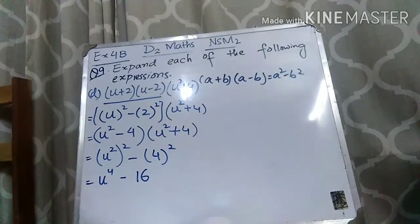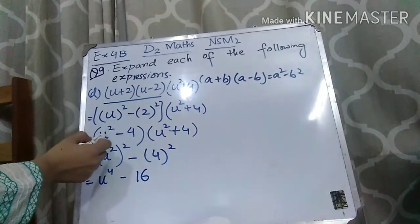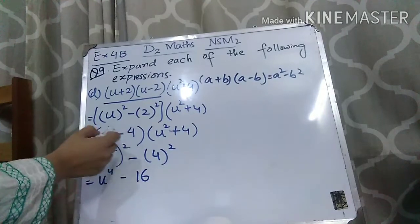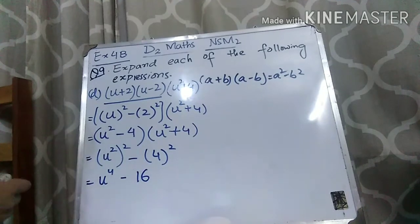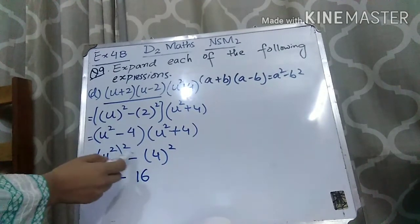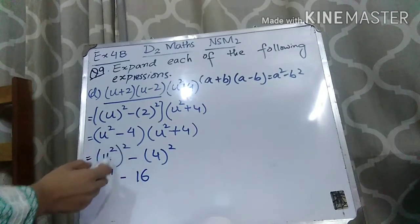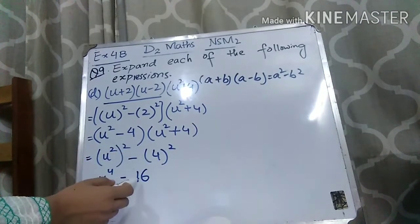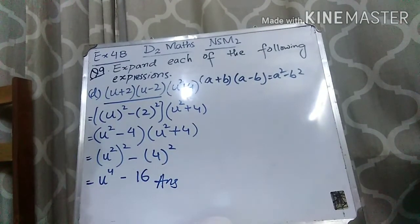Let me explain again what I did in this sum. First, apply the formula to the first two brackets to get U² − 4. Then you have (U² − 4)(U² + 4), and applying the formula again gives U⁴ − 16, because the powers multiply — 2 times 2 is 4 — and 4 squared is 16. So U⁴ − 16 is your final answer. I hope today's lecture is clear to you. Do practice these sums and memorize the formula — practice will make the concept clearer. Thank you very much.